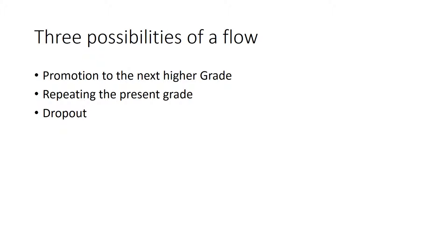When a student is admitted or enrolled in a particular grade within a level, to move from one grade to the other, three possibilities are likely to happen. It's either the student is promoted, or the student fails the class and is asked to repeat, or the student drops out. These three possibilities are vital when calculating the efficiency of an educational system and when you want to determine the cost of wastage.